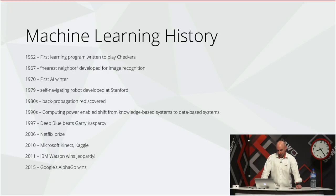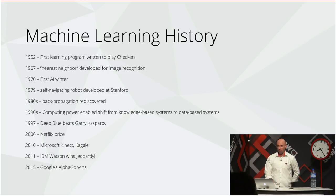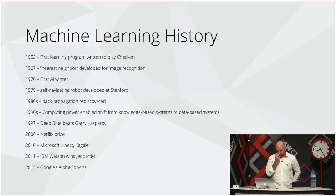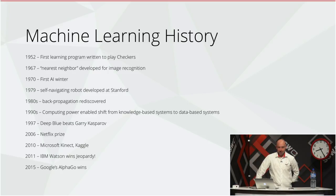What distinguishes a machine learning program from a traditional procedural program is that the rules aren't hard-coded — they adapt to the environment. In 1967, nearest neighbor was developed for image recognition. We then went into what's called the first AI winter, where early hype resulted in many projects failing and the funding and talent going into AI really fell off in the 70s. It came back in the early 80s, with a self-navigating robot in 1979. In the 1980s, back-propagation was rediscovered and had some commercial application.